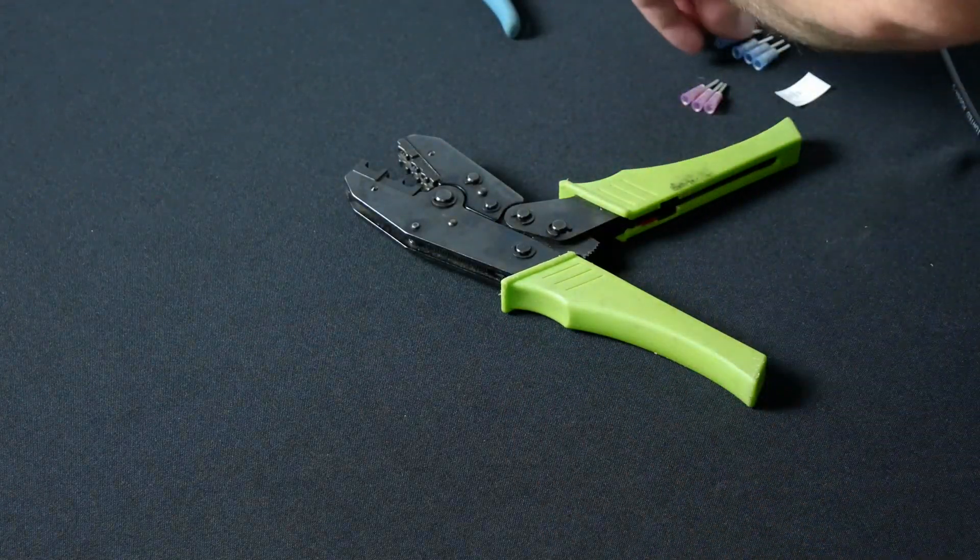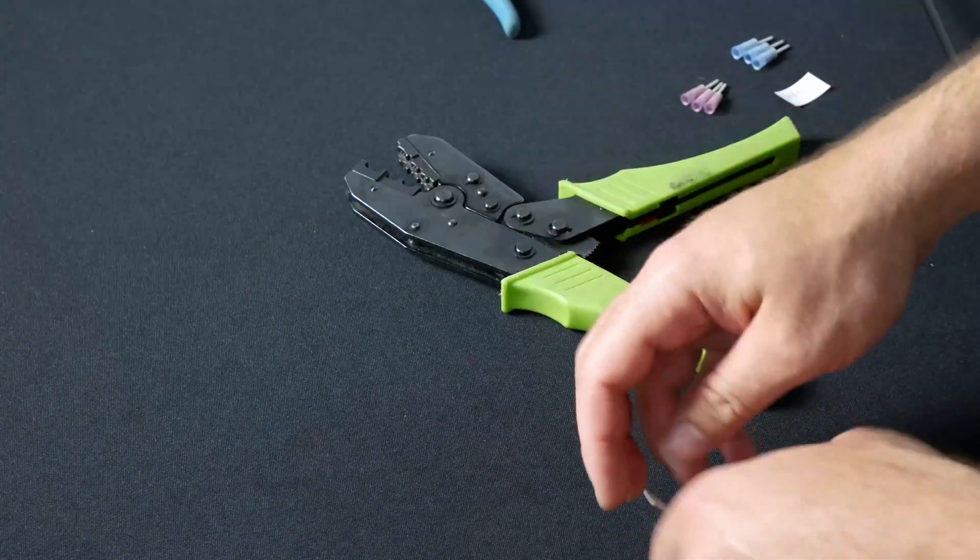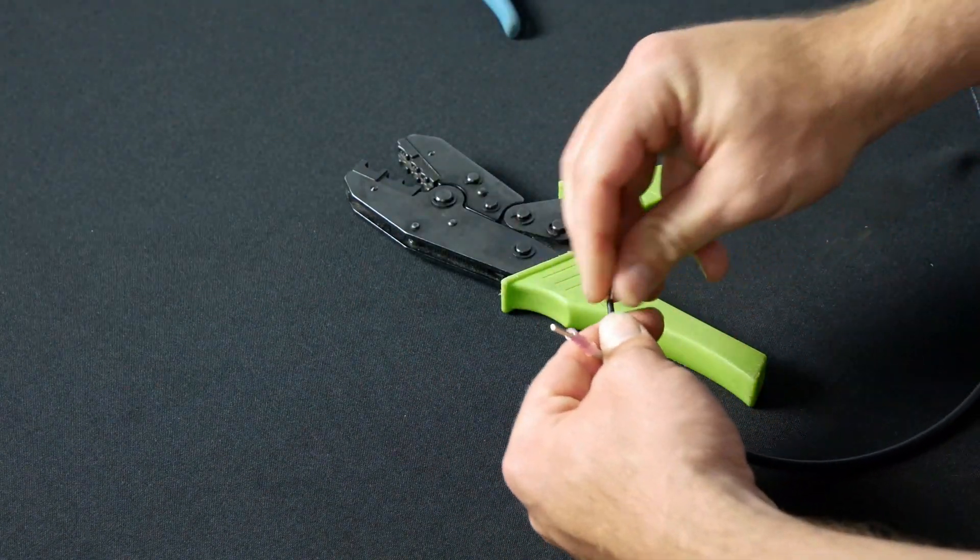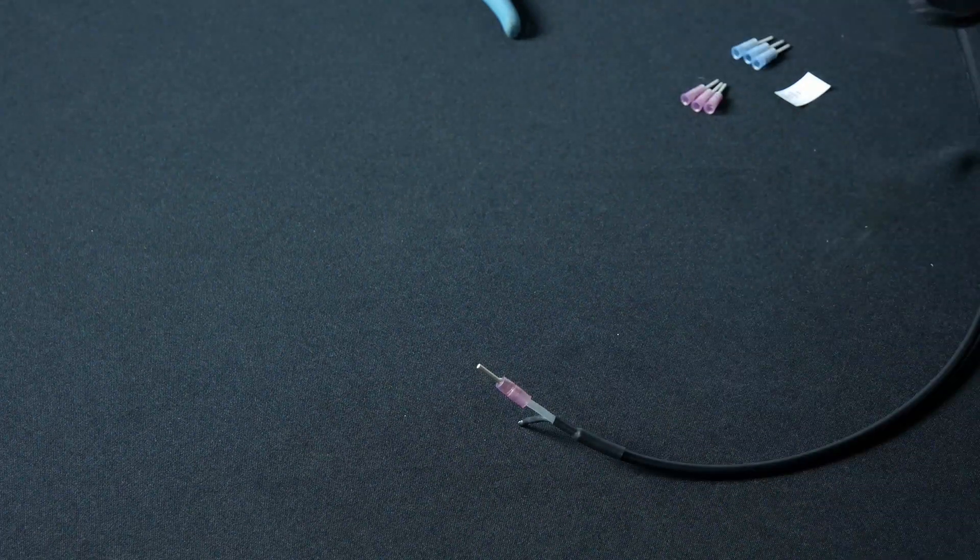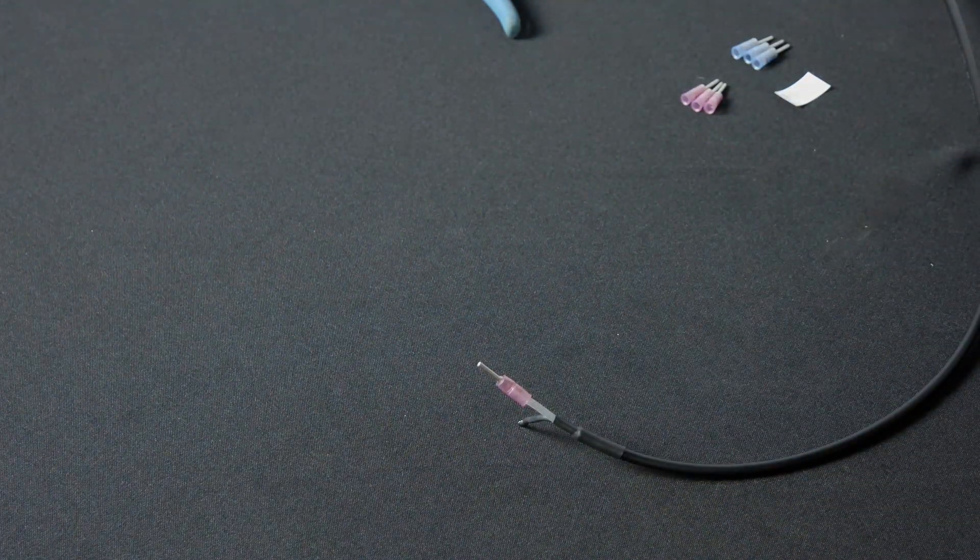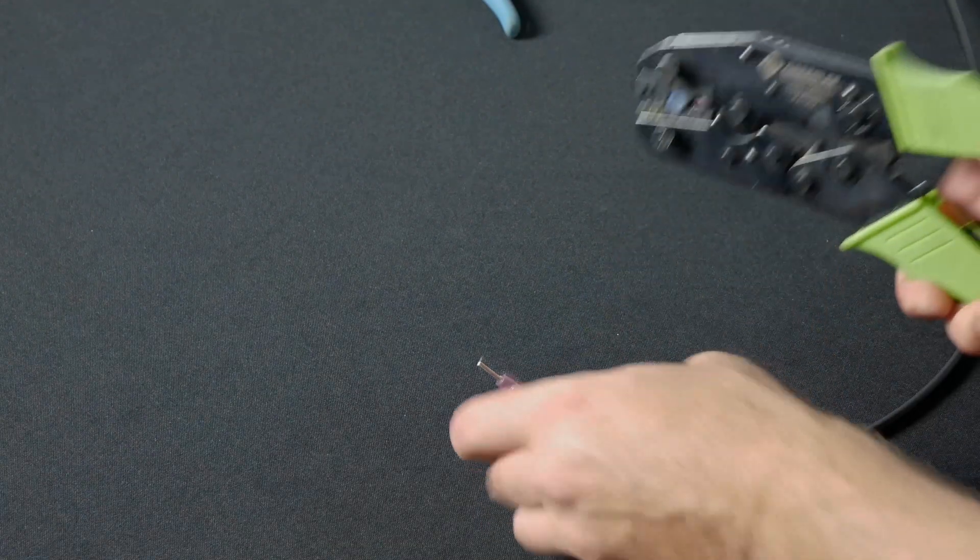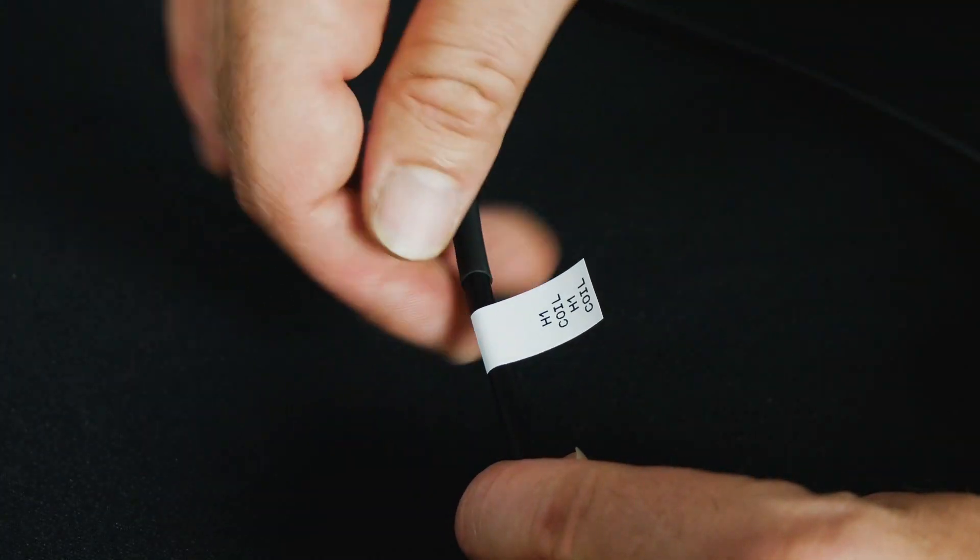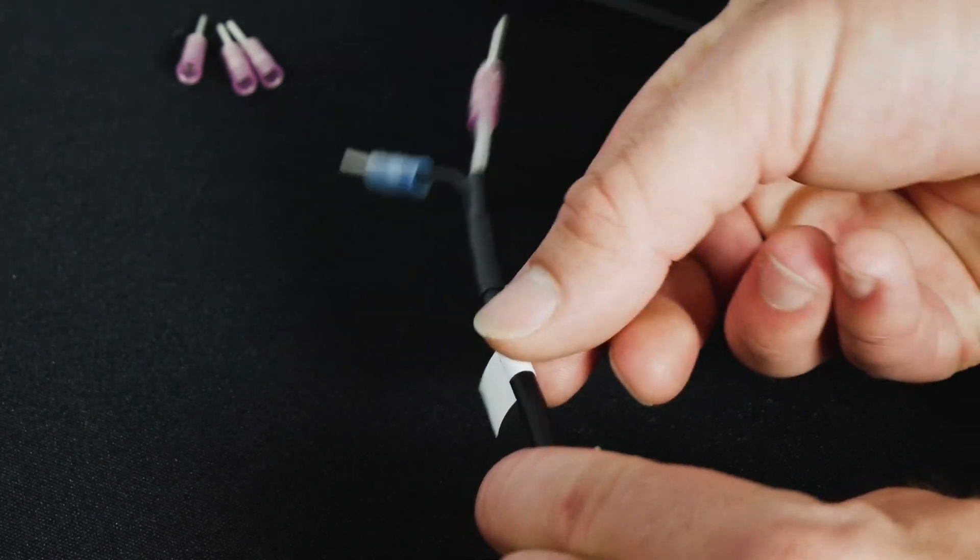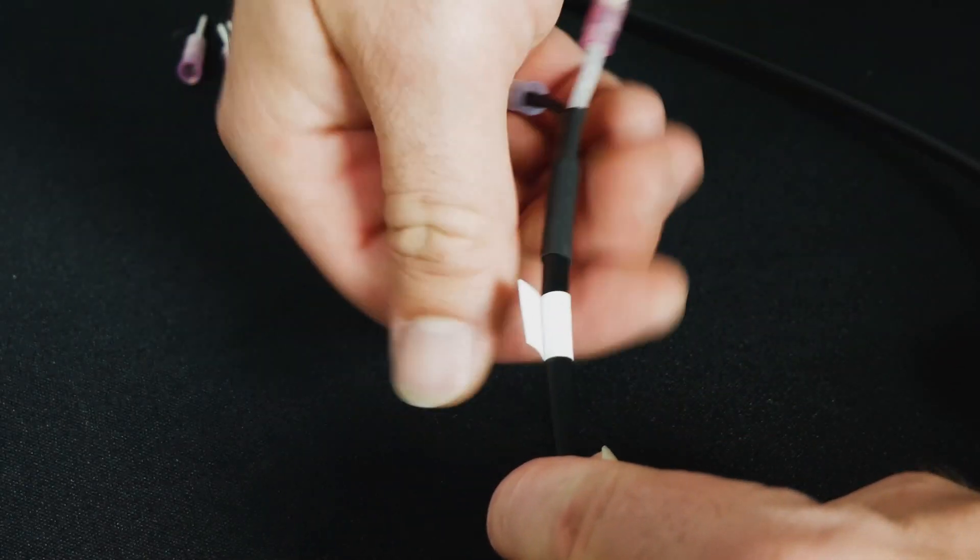The shield conductor is a little bit thicker and that uses a 14-16 size terminal or a blue terminal. Then repeat the same for the shield. Before you move on to your next cable, label the one that you've just terminated.